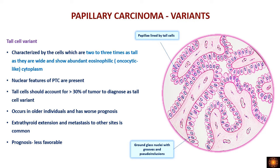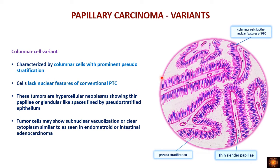Both the diffuse sclerosing variant and the tall cell variant have a less favorable prognosis. The columnar cell variant has papillae lined by columnar cells showing prominent pseudo-stratification, with slender, delicate papillae. Importantly, the tumor cell nuclei do not show the typical features of conventional PTC — they can be hyperchromatic and do not show ground glass nuclei, grooving, or inclusions. Sub-nuclear vacuoles similar to those seen in endometrioid or intestinal adenocarcinomas can sometimes be found.